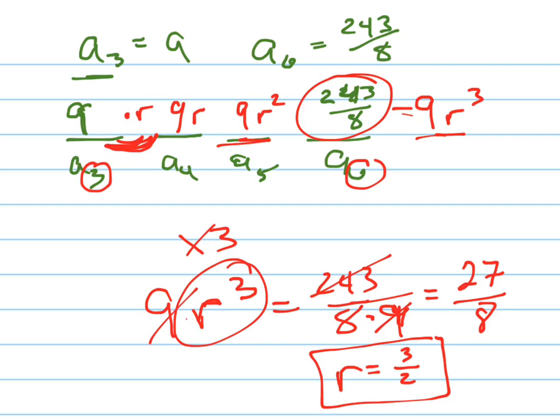Alright. So if r is 3 halves, what was the first term, a sub 1? We have to work backwards. Here's a sub 3. If a sub 3 is 9, if I divide that by 3 halves, 9 divided by 3 halves means multiply by the reciprocal. So that's going to be 6, right? Because the 3's cancel the 9 and multiply by 2.